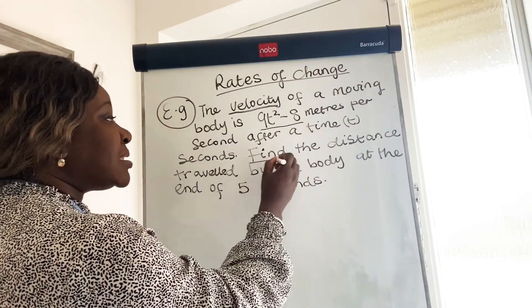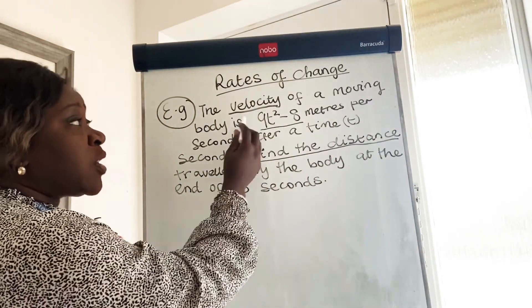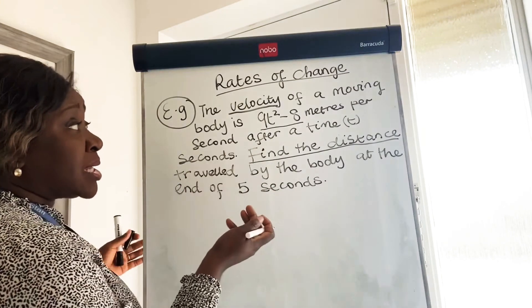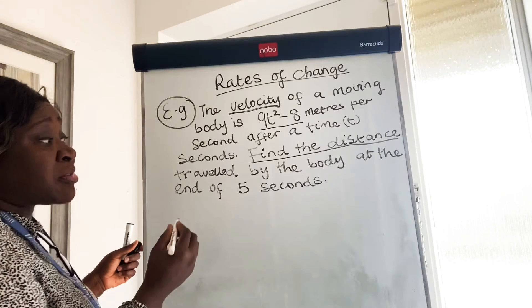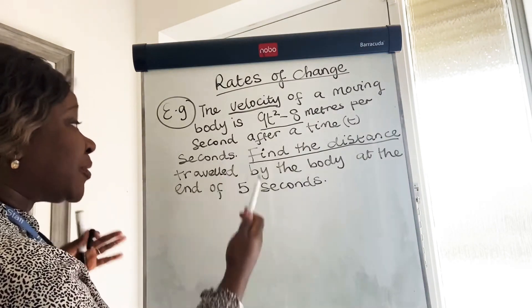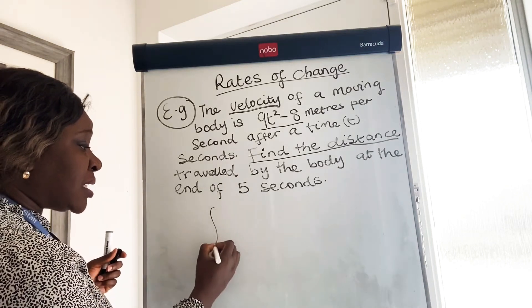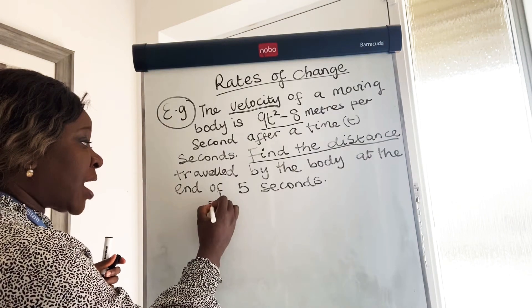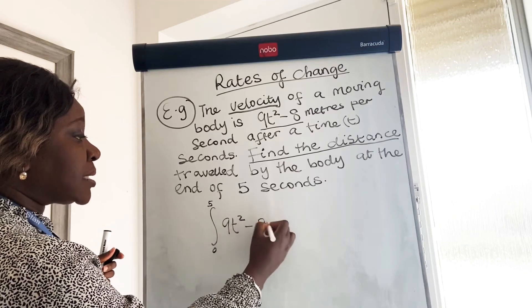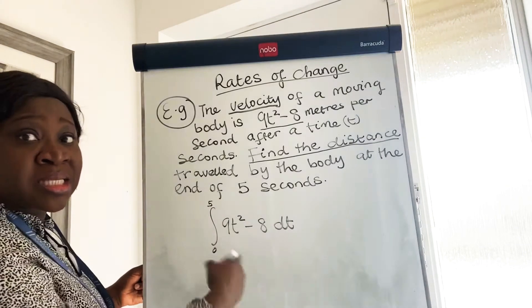It says find the distance. Looking at your chart, when you're given the velocity and asked to find the distance, you have to integrate. This looks like a definite integral problem because it says to find the distance after five seconds. So if we write that as integrating from zero to five of 9t squared minus 8 dt, then we can work out that distance using the definite integral.